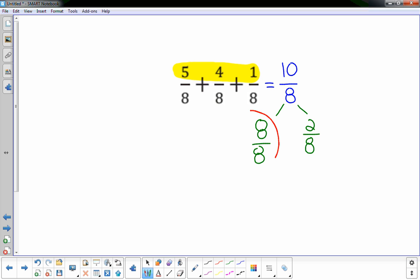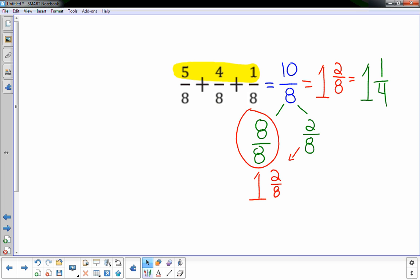So this 8/8, that's one whole. And the 2/8, I can just slide over there, and I'm done: 1 and 2/8. Now if you want to reduce that to simplest form, some of you are able to do that, you could say it's also 1 and 1/4.